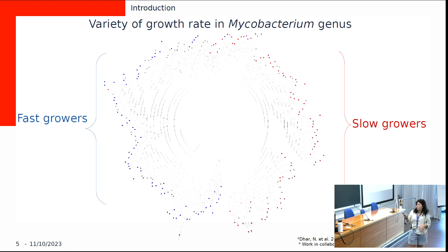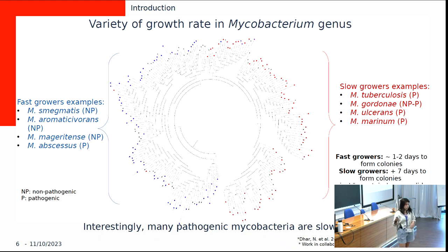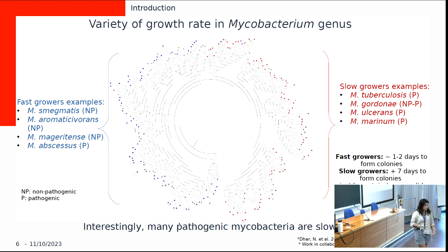It's interesting because a lot of the slow growers are also pathogenic, but not all. For example, among slow growers there's MTB, Mycobacterium ulcerans, and Mycobacterium marinum, which is typically pathogenic to fish but has caused clinical cases infecting children. Among fast growers is Mycobacterium smegmatis, which is non-pathogenic and found in the environment. But the pathogenicity-to-growth-rate relationship isn't clear, since Mycobacterium abscessus is also pathogenic but is a fast grower.